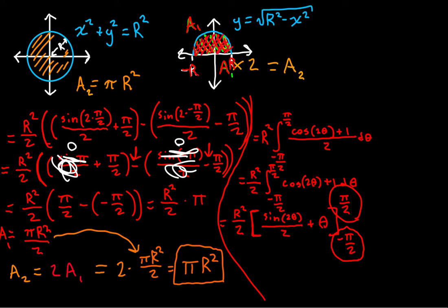We have proven, using integration of a semicircle with trigonometric substitution, that the area of a circle is pi r squared. This is not the quickest way to prove the area of a circle, but it's probably my favorite way because of how straightforward it is in terms of intuition and how we've learned to take areas under curves. I hope you enjoyed this video and are now comfortable telling people that the area of a circle is pi times the radius squared. Thanks for watching.